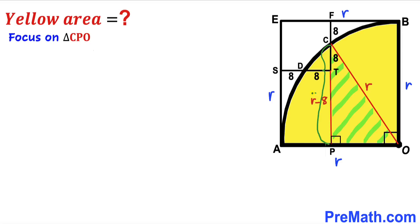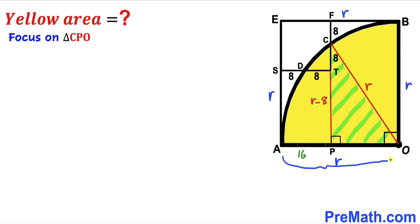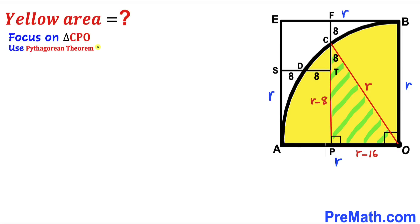Now let's observe that ST length is 8 plus 8 plus 8, which makes it 16, so segment AP is 16 units as well. Since the whole AO is radius r, this PO length is going to be r minus 16.